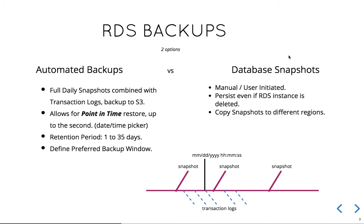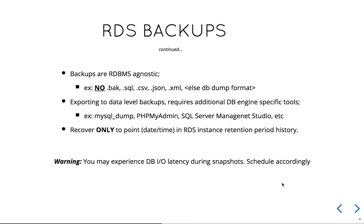For manual database snapshots, the main difference is that snapshots persist even if the RDS instance is deleted. With automated backups, when you delete the instance all automated backups are deleted with it. With manual snapshots, the snapshot is saved in your RDS AWS console. Manual snapshots also allow you to copy snapshots to different regions — copy, migrate, and restore into different regions.